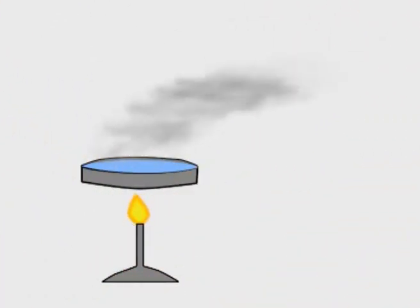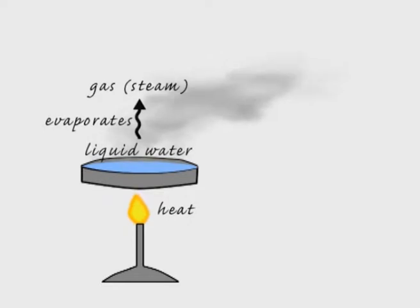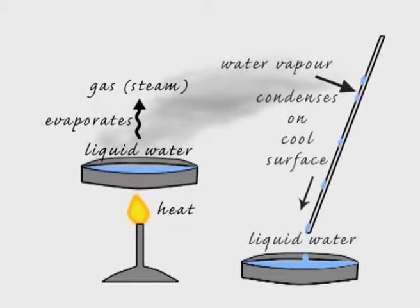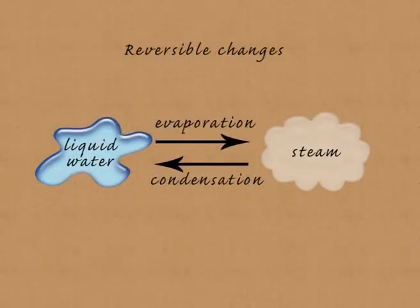Liquid water can be changed into gas by heating it up so that it evaporates. This change is reversible because we can cool the water vapor down so that it condenses back into liquid water. Evaporation and condensation are reversible changes because we get back the original material we started with.